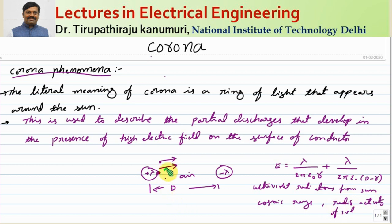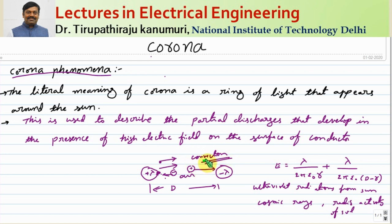When you apply the electric field, the charged particles in the air — both positive and negative — get attracted to the respective conductors. Positive charges are attracted to the negative conductor and negative charges to the positive conductor. This results in a small current called convection current, which flows in free space not associated with the conductors. Generally, the value of this convection current is very small and can be neglected.